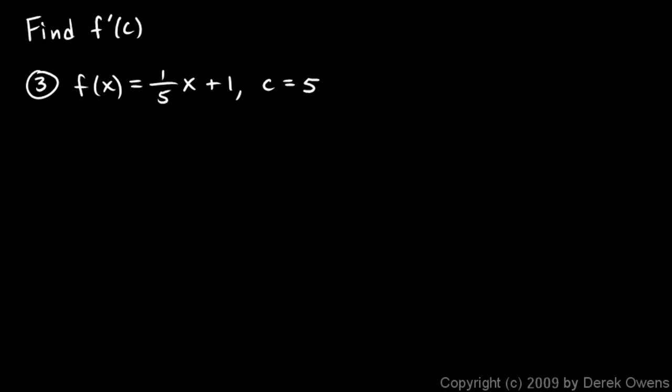We're back and continuing to work through practice problems involving difference quotients. We're given the function 1/5 x plus 1 and told to find the derivative at the point c where c equals 5, so find f prime of 5. We'll find f of 5 first — the value of the function.